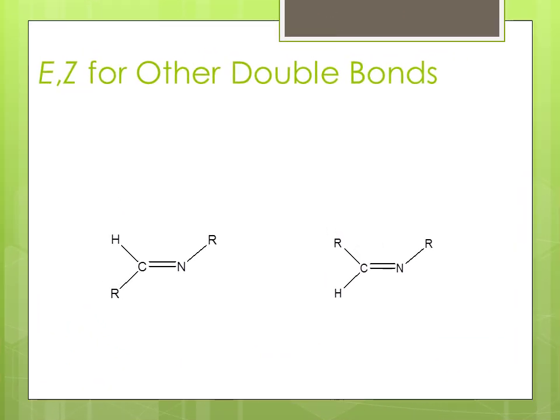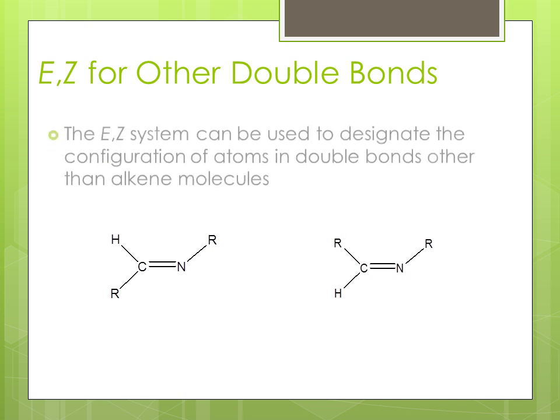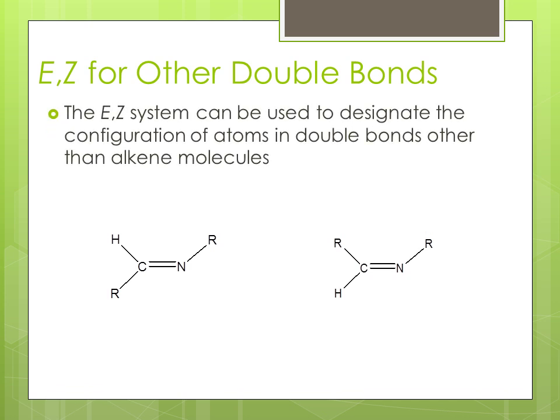E/Z for other double bonds. The E/Z system can be used to designate the configuration of atoms in double bonds other than alkene molecules. Here's an example: an E configuration and a Z configuration.